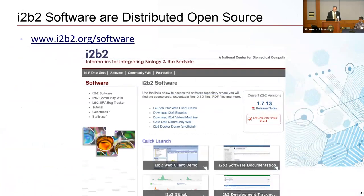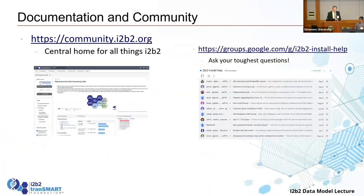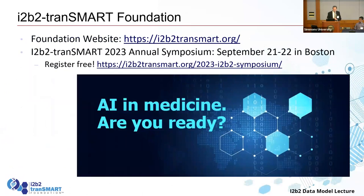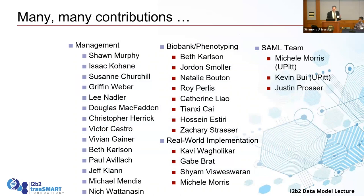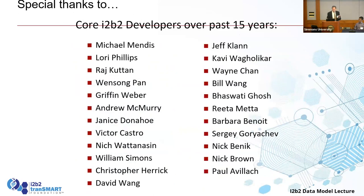There's a common data model for both i2b2 and tranSMART that allows them to be interoperable. It's distributed as open source at i2b2.org/software or community.i2b2.org. Many, many people over the years contributed — I couldn't even list them all. Thank you all very much.